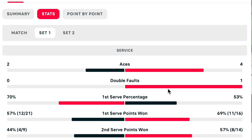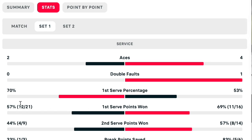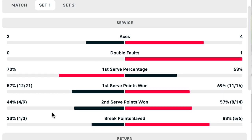You want the first set loser to be serving well, so 70% of first serves going in is a positive indicator, especially versus 53% from Norrie. Although Norrie won more of his first serve points at 69% versus 57% from Kekmanovic, this is not that much of a significant factor. If the numbers were spread further apart then this would be of concern. Second service points won is not so important here, especially given that Kekmanovic got 70% of his first serves in.